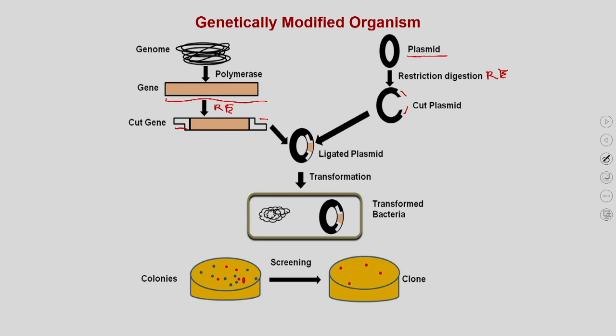These chimeric plasmids are then transformed into the bacteria or other organisms you are interested in modifying. As a result of this transformation, you get new bacteria or new organisms with the additional traits provided by this particular gene.